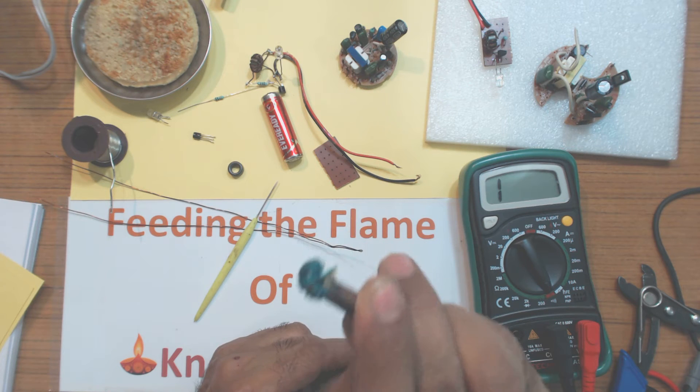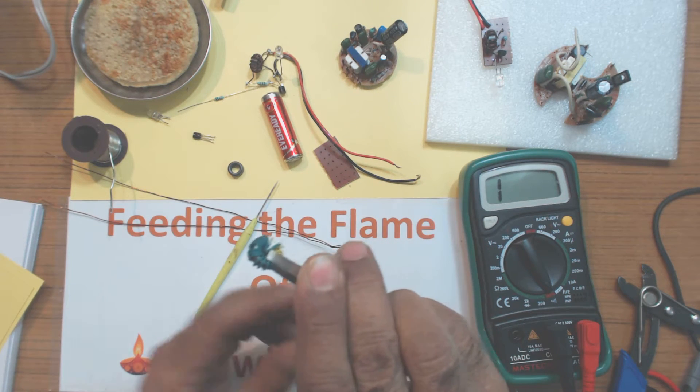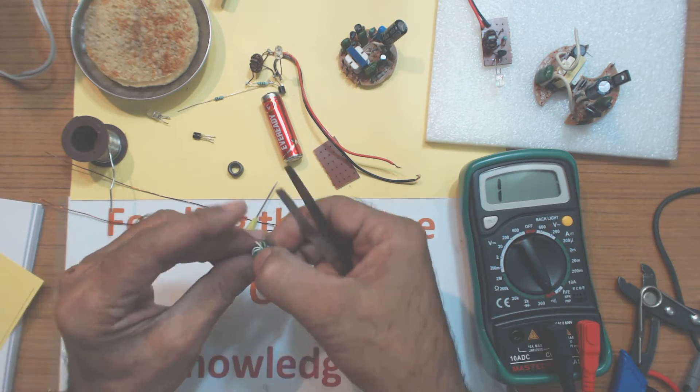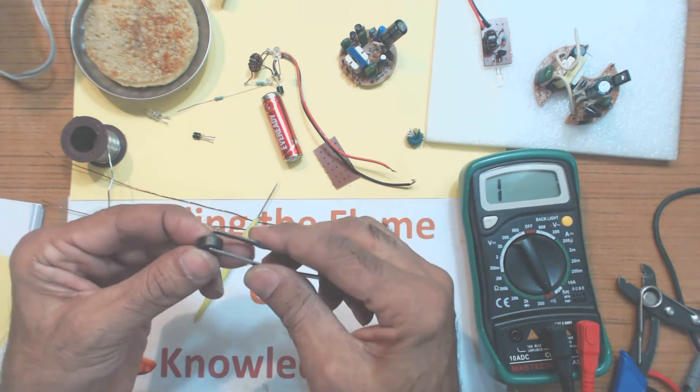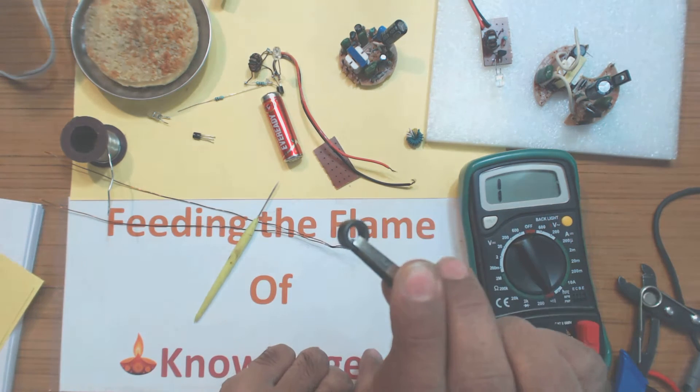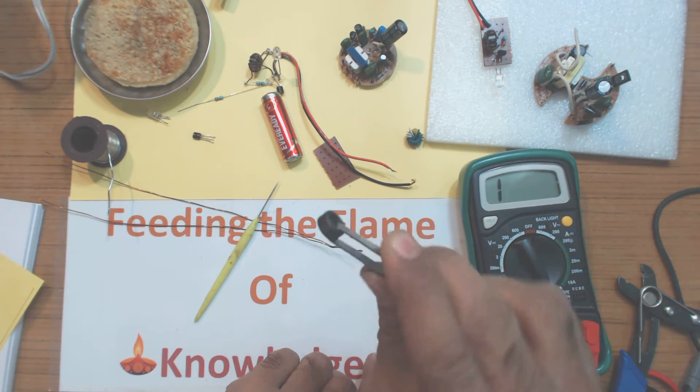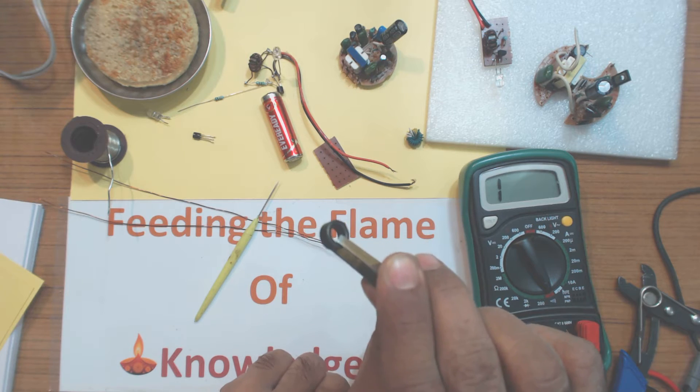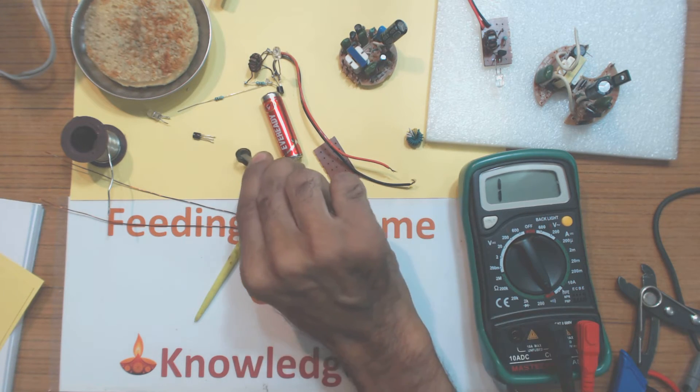So when you take out from the discarded CFL, you remove the wires and you will just need this ferrite core which is underneath toroidal round ferrite core. So you don't have to purchase it. The transistor and this core will be used in this circuit.